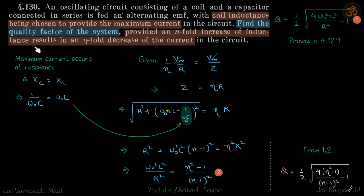of inductance. After this inductance is chosen, if we increase the inductance n-fold, current decreases eta-fold. Then what is the quality factor? First thing we know is maximum current occurs at resonance.